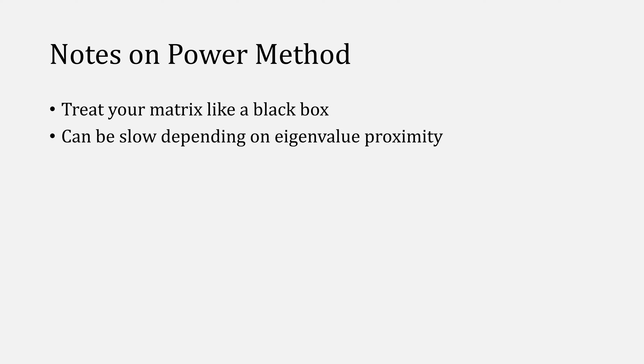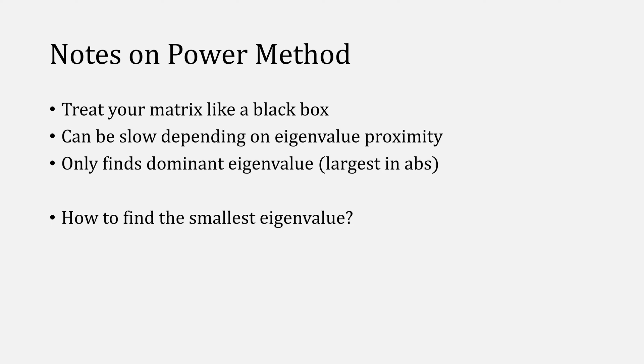The nice thing about power method is that this process of multiplying and factoring, multiplying and factoring, works on most any matrix, although it can be slow depending on how your eigenvalues are configured, and it only finds the dominant eigenvalue, meaning the one that is largest in absolute value. What if you wanted to find a smaller eigenvalue?